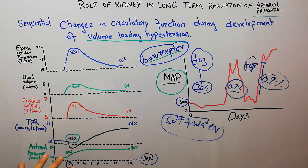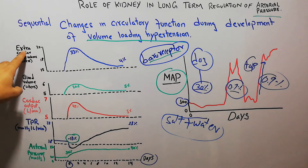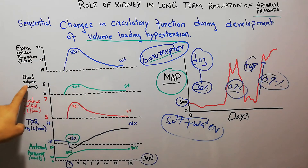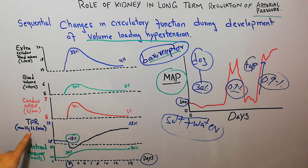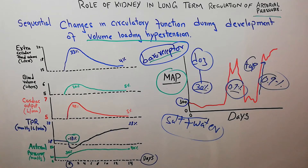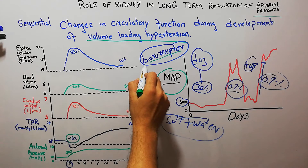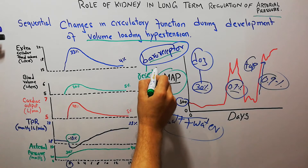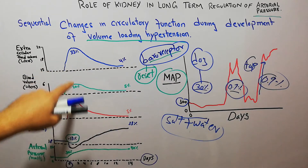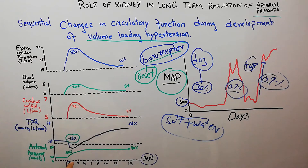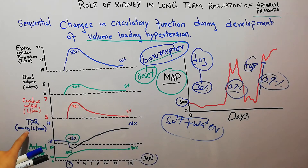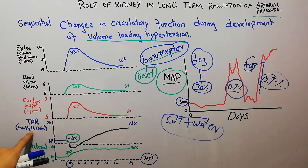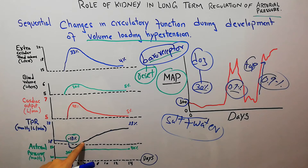After a few days or weeks, the extracellular fluid volume starts decreasing, blood volume also starts decreasing, cardiac output starts decreasing, and total peripheral resistance starts increasing. Total peripheral resistance starts increasing because the effect of baroreceptors is only in the acute stage — then they reset. If they fail to bring arterial pressure back to normal, they reset at the new high level, and can no longer control total peripheral resistance.